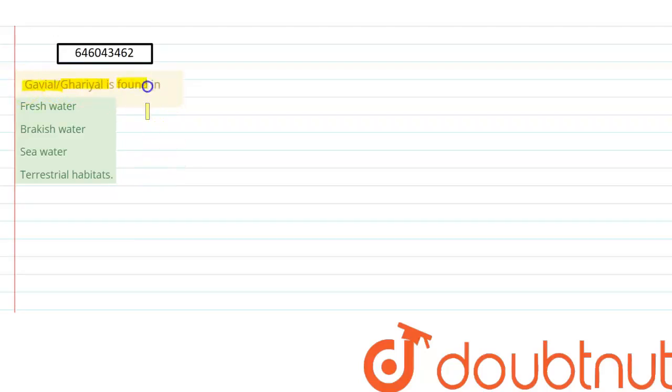and the options are: fresh water, brackish water, sea water, or terrestrial habitats. So gavial or gharial is a crocodile.